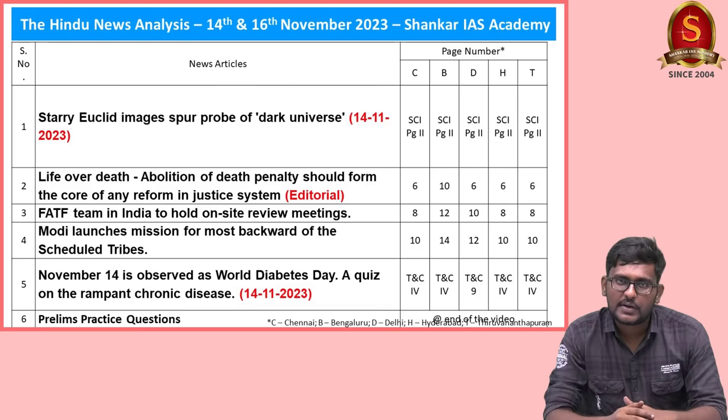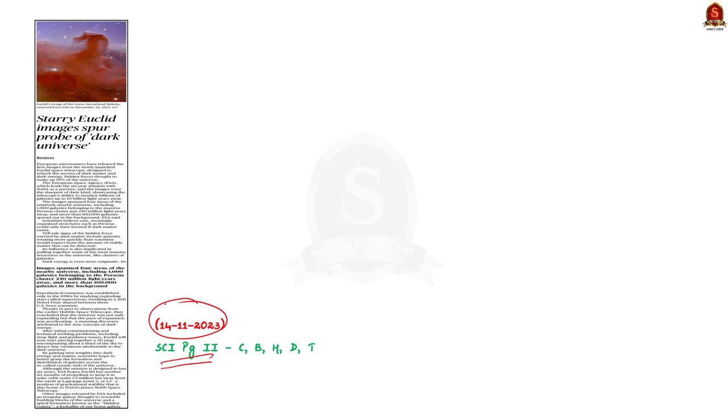Here is the list of articles which we are going to discuss today. Without wasting time, let's get into discussion. Take a look at this science page article from 14th November. This news article talks about dark matter and dark energy. Recently, European astronomers released their first images from the newly launched Euclid space telescope. These images give us clarity about dark matter and dark energy. In this discussion, let us quickly go through these two basic science terminologies: dark matter and dark energy.